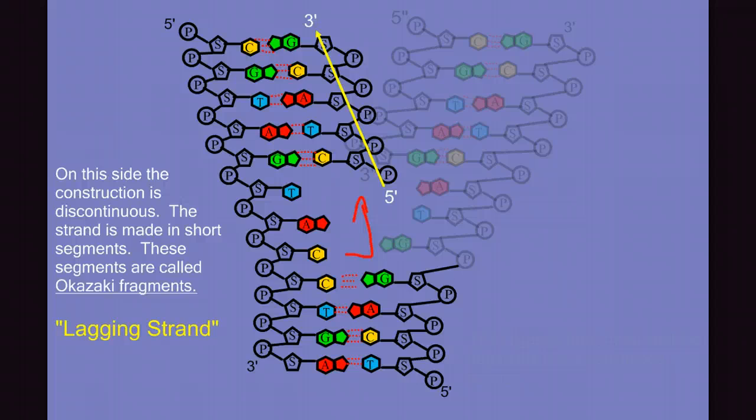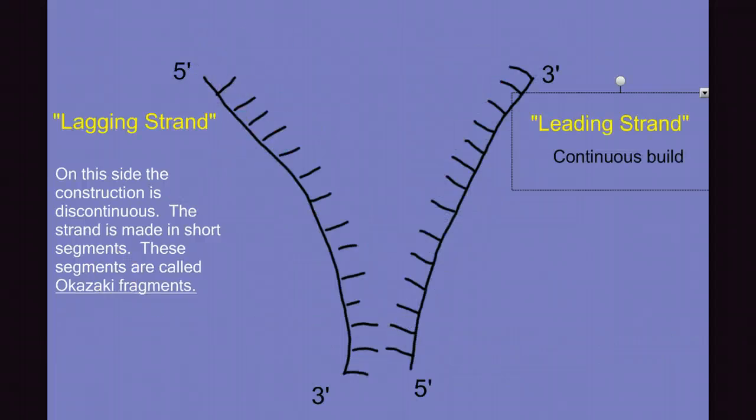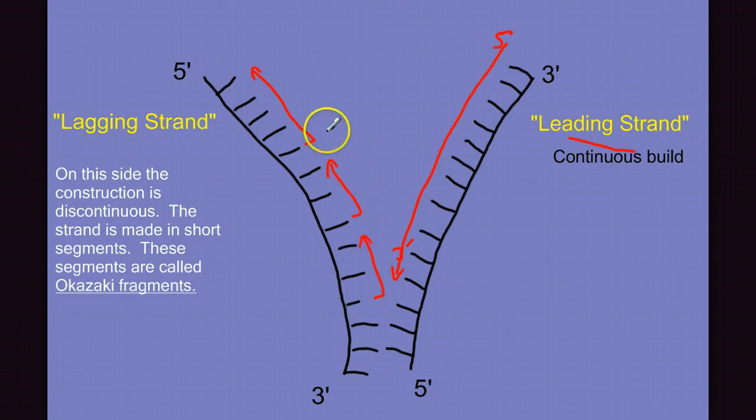Let's draw this a little differently so we can see better what will happen. So on this side, since this is our five prime end, we can have a continuous build as we follow this molecule kind of unzipping. A continuous build from the five prime to the three prime end. Again, we call that the leading strand. But on this side, we would unzip, build this direction, unzip some more, build up again, unzip some more, and build up again. So it's a discontinuous build, each time building from five prime to three prime, five prime to three prime. And we have these fragments of these sections. And we call these fragments Okazaki fragments.